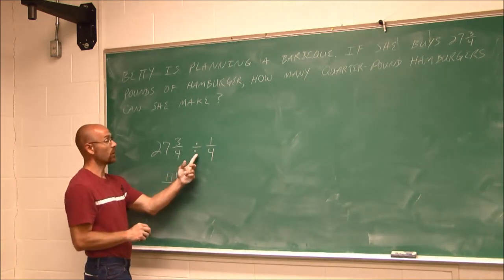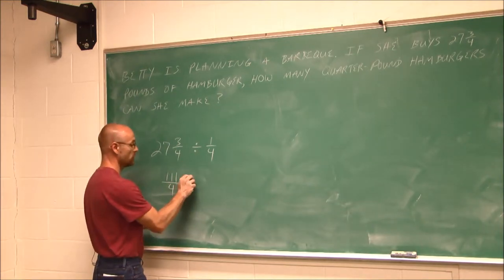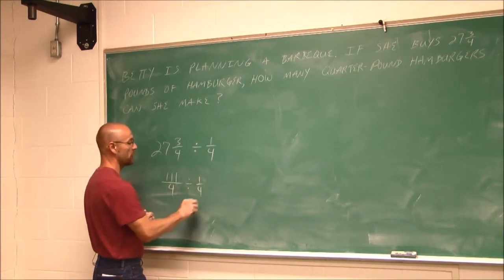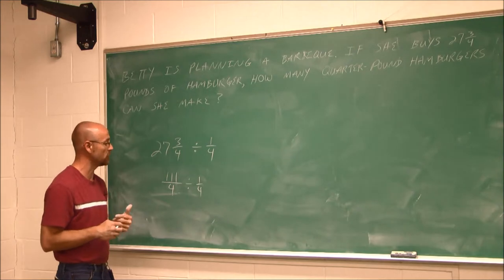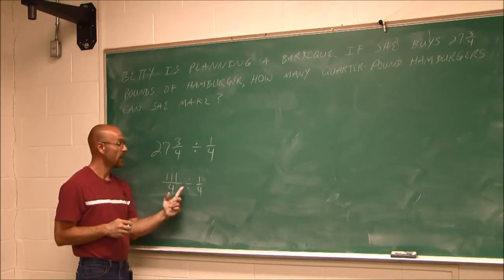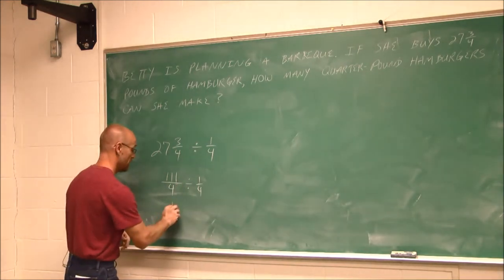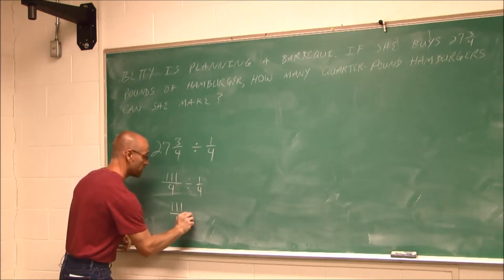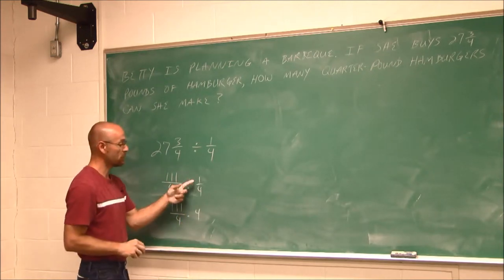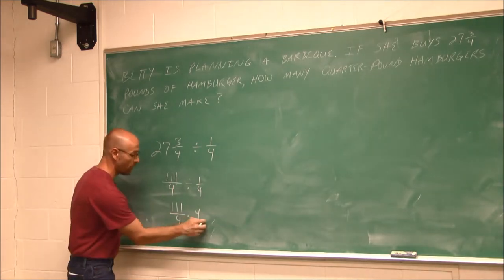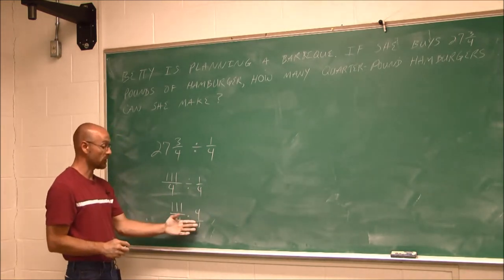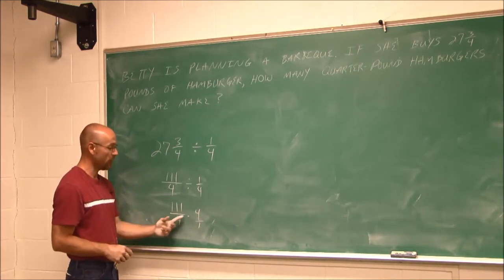Now we're going to divide it by a quarter. Let's just rewrite that for a moment. Because here's where multiplication and division are different. If I'm dividing fractions, I have to multiply by its reciprocal. Well, the reciprocal of 1/4 would be 4/1, or just 4. And we can see, hey, we can reduce here.